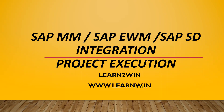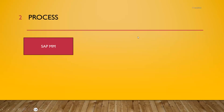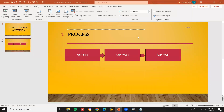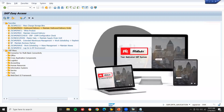Hello everybody, Swaminath here. Today we are going to see SAP MM, EWM, and SD — Sales and Distribution — that is inbound delivery. I'm going to put away the material in EWM, pick the material from the EWM warehouse, and sell it to the customer. This is a real-time MM EWM SD integration project execution.